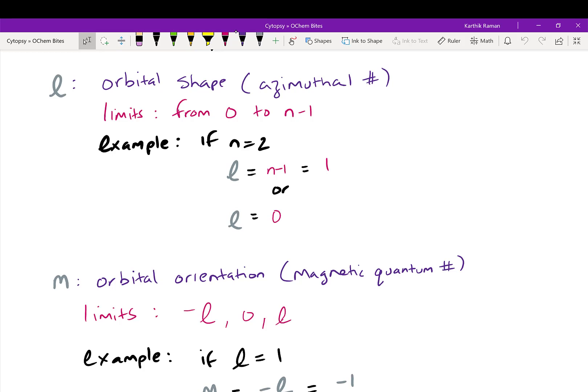n can be 1, 2, 3, 4, and L can go from 0 to essentially 0, 1, 2, 3, 4. So you can see that it'll be always n-1. And here's an example. If n is 2, then L can be 0 or it can be n-1, which is 1. Hopefully, that's simple enough.